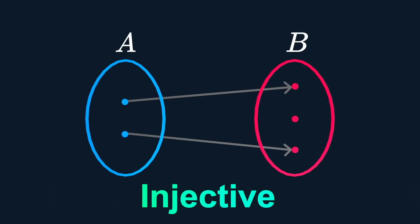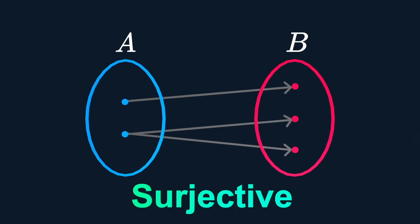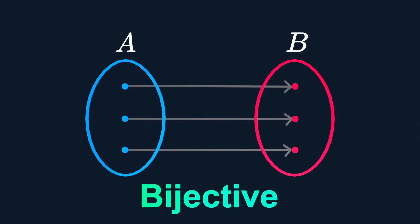Injective, where each element in the range has at most one element in the domain mapping to it. Surjective, if each element in the range has at least one element from the domain mapping to it. A bijective function is where it is both injective and surjective.